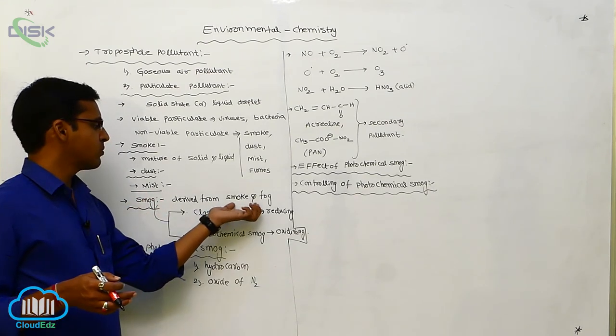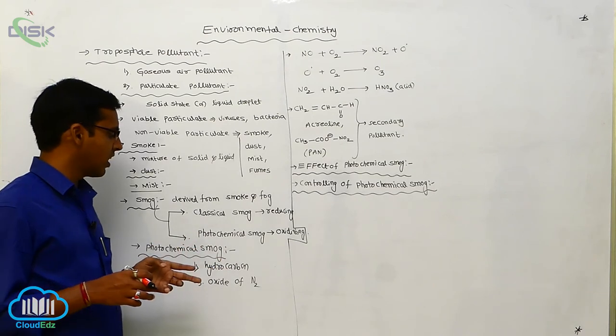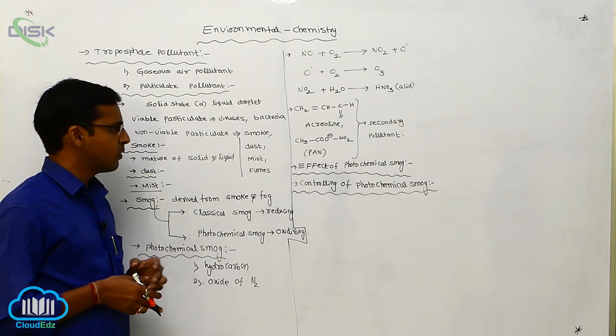Smog is derived from smoke and fog. There are two types: classical and non-classical, means photochemical smog.